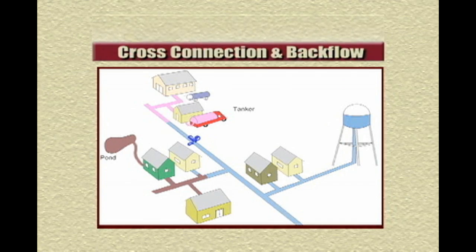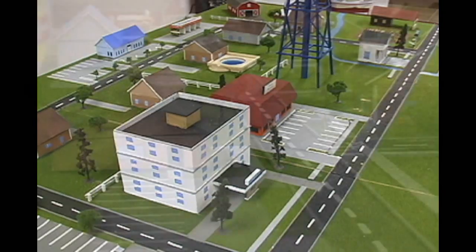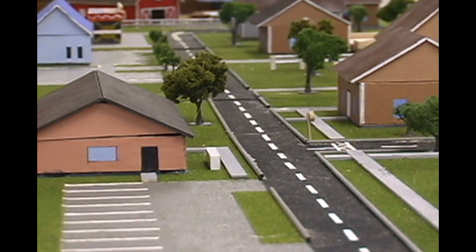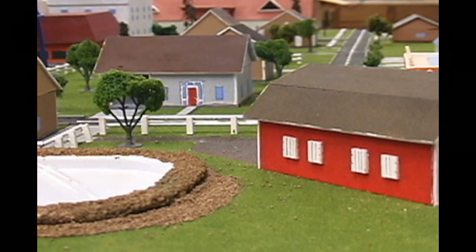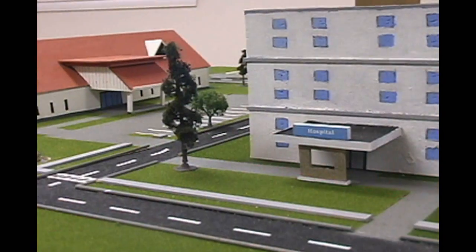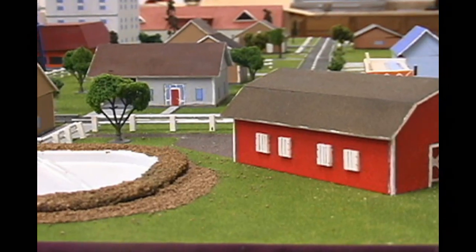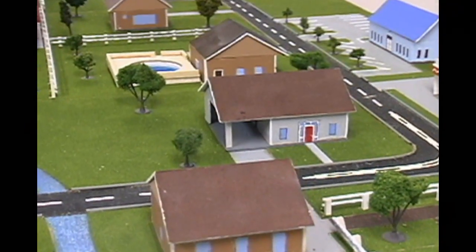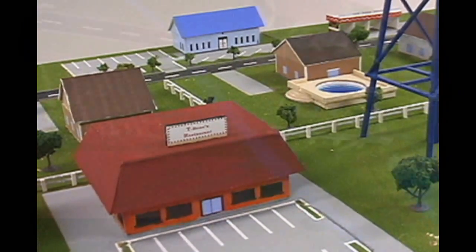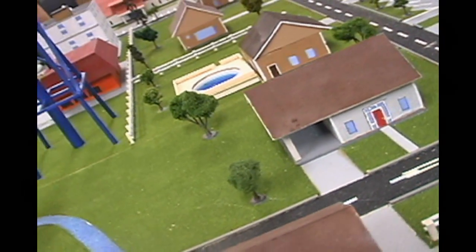Now let's go into a neighborhood to see how this scenario plays out. Here is a model of a typical community, fully equipped and operating with a closed-loop water system, much like you would find in your own hometown — from a community hospital to a rural farmhouse, a school, funeral home, residential neighborhood, and local restaurants. On this day, all of these facilities are going about their daily routine.